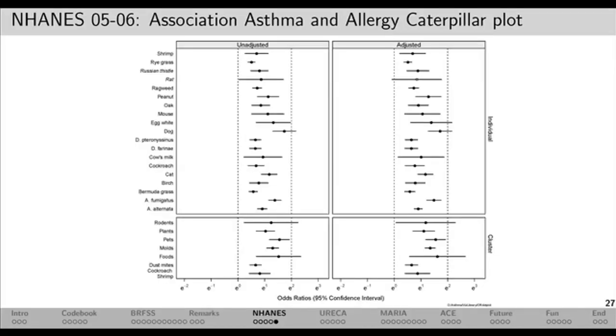I've ordered the allergens by their degree of association and added a dendogram so you can see how they cluster. Rat and mouse cluster together, dog and cat cluster together. Shrimp and cockroach cluster together — they share a lot of the same traits, amazingly enough. The two dust mites, Der p and Der f, are very highly correlated at 0.97. You can see the tree clusters as well — mold clusters, trees cluster together, and milk and egg are among the weakest correlations.